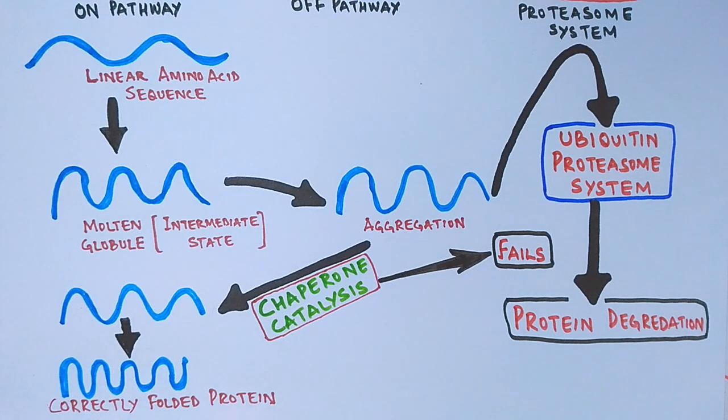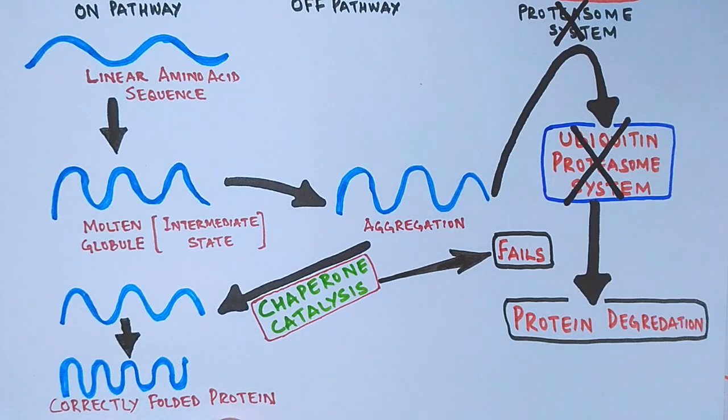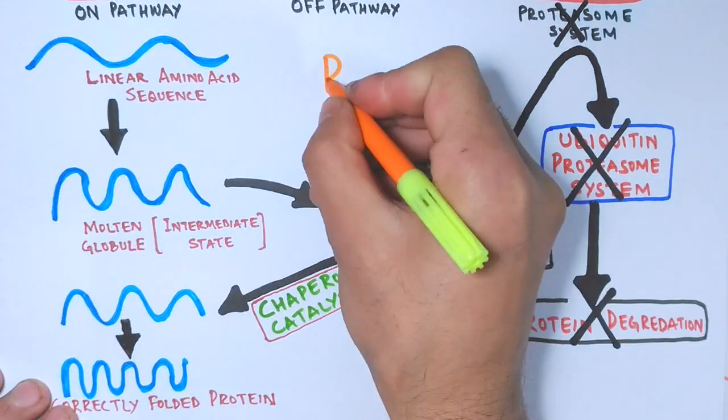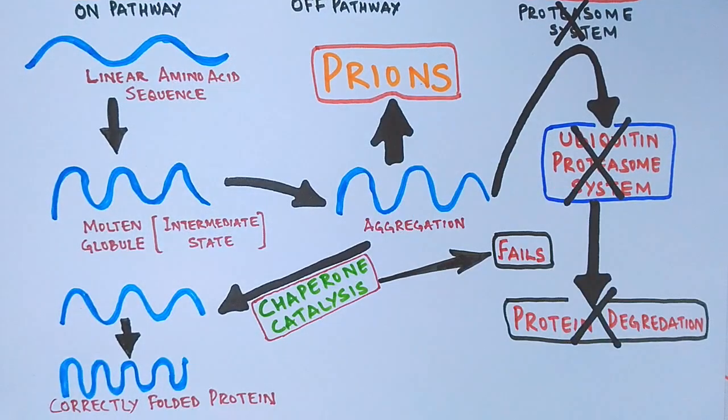And there are some aggregated proteins that resist the proteasome system for degradation. And that proteins later on become the prions that leads to the cerebral disease later on.